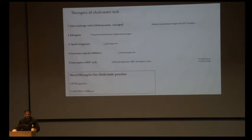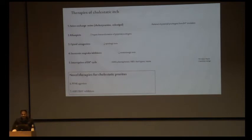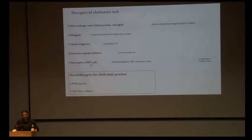Scratching induces pain, which stimulates pain fibers and competitively inhibits the pruritic sensation — that is how opioid antagonists act. SSRIs have also been tried. Additionally, one can interrupt the enterohepatic cycle to remove pruritogens via nasobiliary drainage, albumin dialysis, MARS, or plasmapheresis. Novel therapies include PPAR agonists and ASBT or IBAT inhibitors.